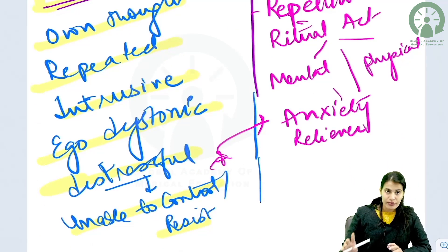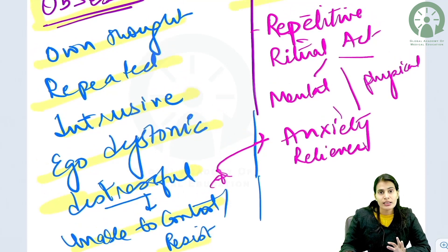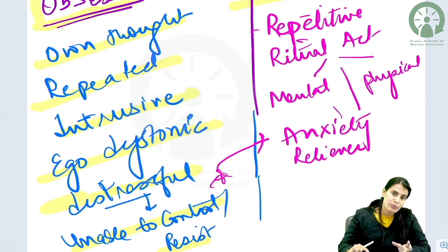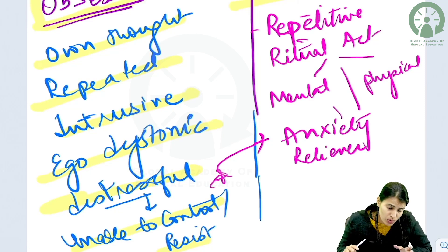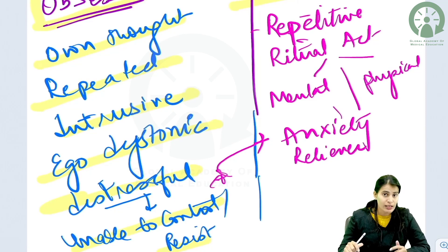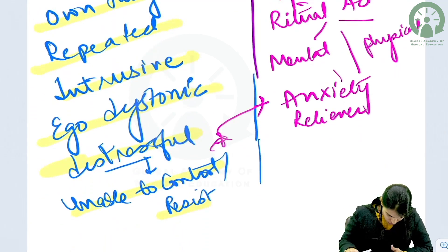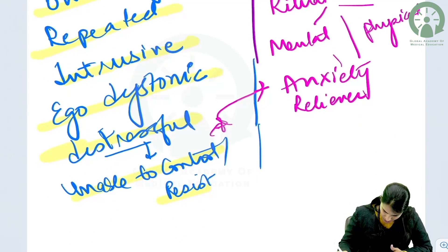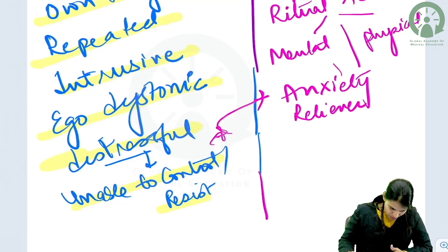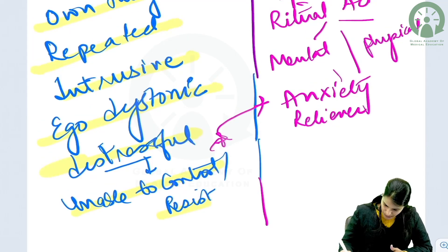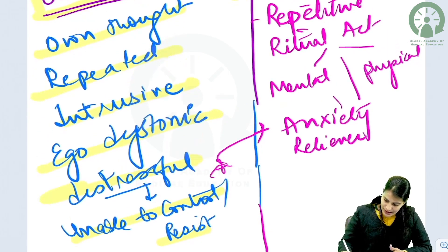They relieve the distress but only for a short, transient duration. After that, the thoughts come back again and cause anxiety once more. So compulsions are only transitionally removing the anxiety.